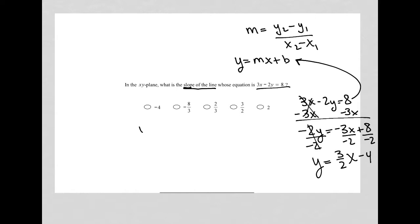Now that I'm in this format, I'll just rewrite it: y equals mx plus b, and write underneath it, y equals 3 halves x minus 4.